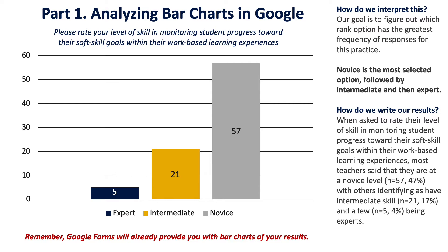We interpret this by figuring out which rank option has the highest frequency of responses for that particular practice. Each question in your program evaluation tool is aligned to an evidence-based or promising practice from your literature analysis. Our goal is to figure out which response option is highest for that practice. In this case the practice is soft skills within work-based learning — monitoring student progress — and novice is the most selected option (57 responses), followed by intermediate (21), and expert (5).